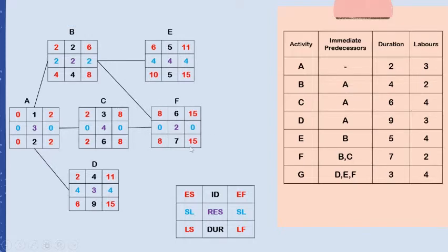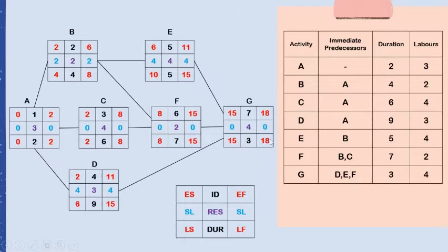Once B and C are complete, we can proceed to activity F. For activity G, the immediate predecessors are D, E, and F, so all three must be completed first before proceeding to G. For the latest finish and latest start, we derive these from the project due date. The earliest finish and latest finish share the same due date, and the latest start is calculated as latest finish minus duration, giving us fifteen.